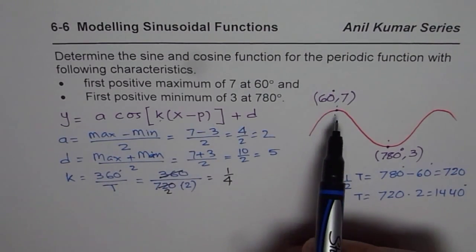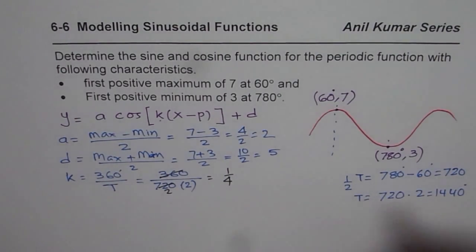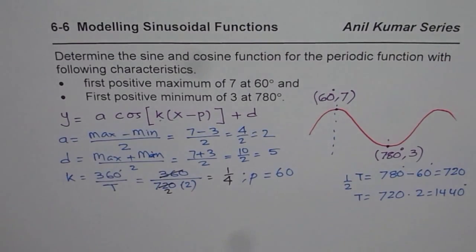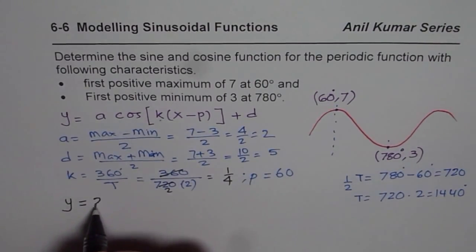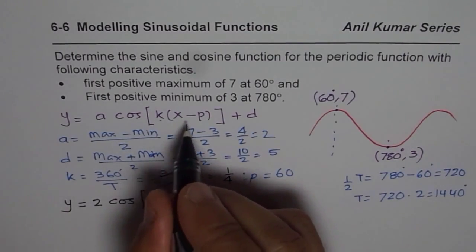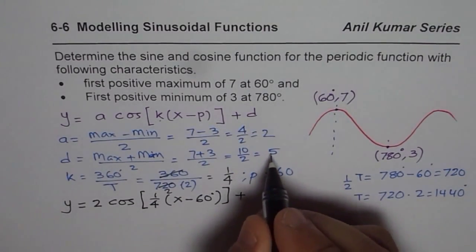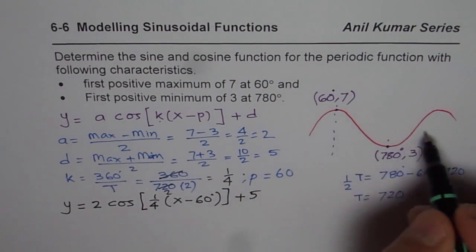Now for the phase shift: the cosine function starts with a maximum. Since the maximum occurs at 60°, the phase shift p = 60°, a positive shift to the right. So the cosine equation is y = 2·cos(1/4·(x − 60)) + 5. See how easy it is — we didn't really have to work hard for the phase shift.